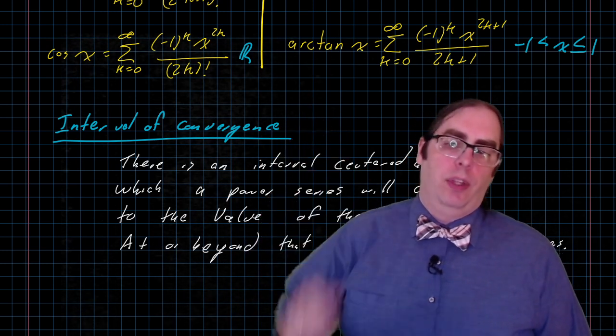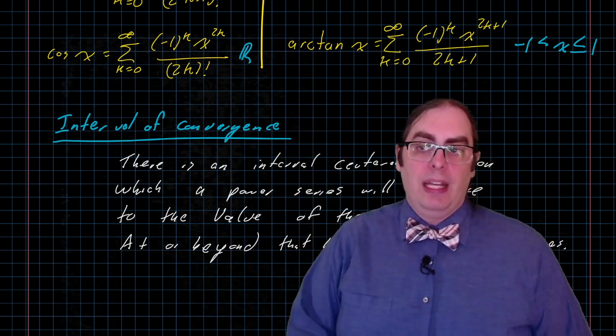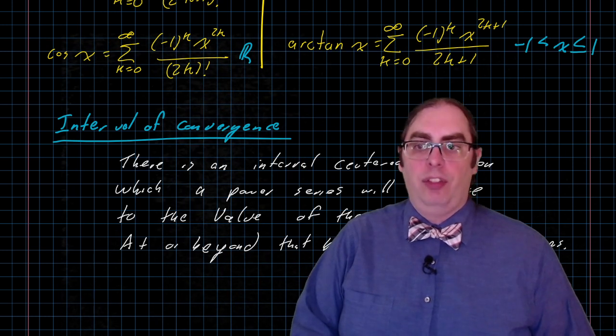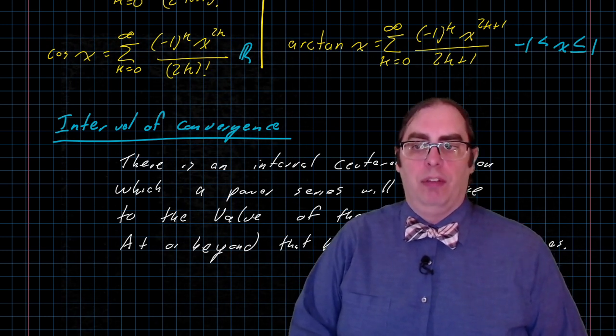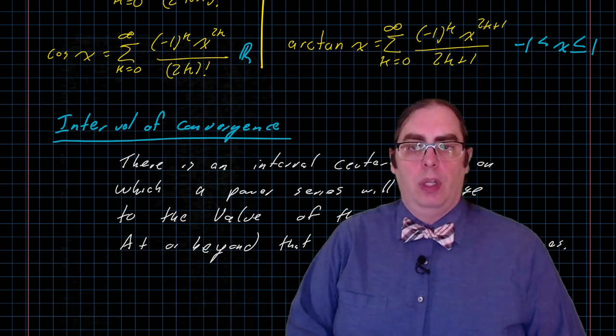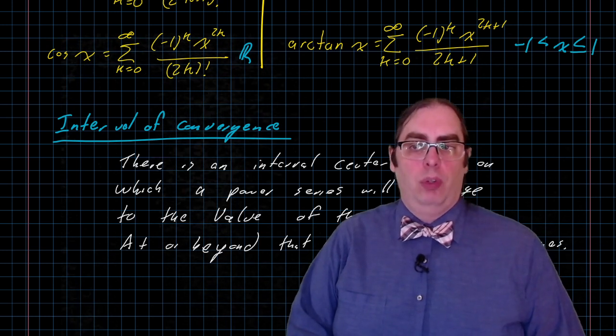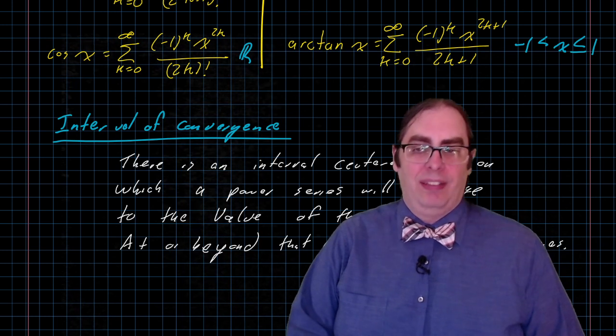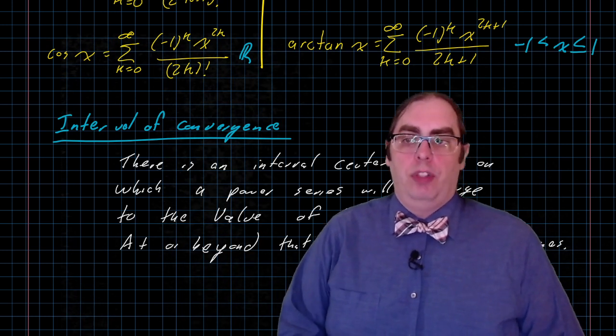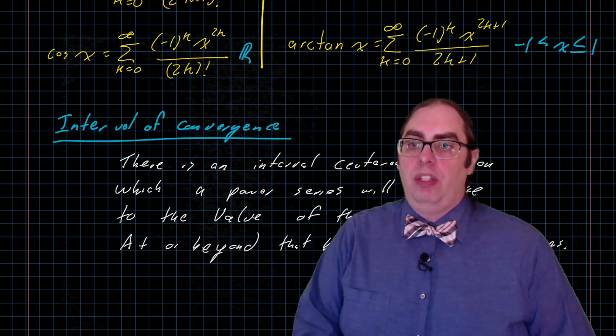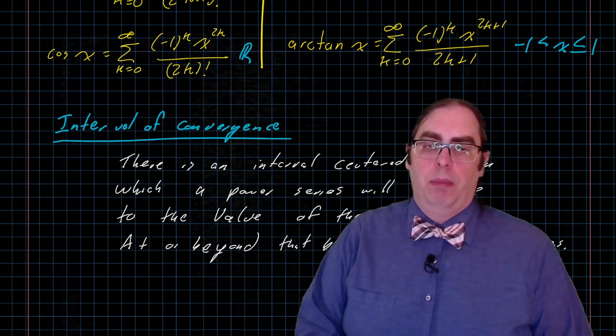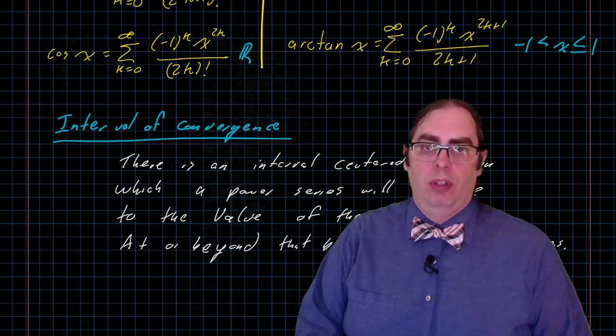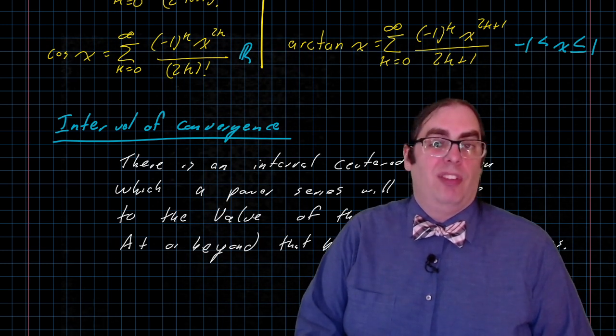The arc tangent, the one that's still on the screen here, I believe that that actually does converge everywhere except x equals negative 1. At x equals negative 1, bad things happen. At x equals positive 2, the series I believe converges again. The problem is that it converges to something else.